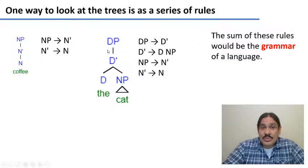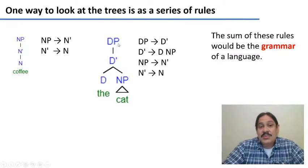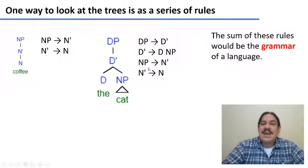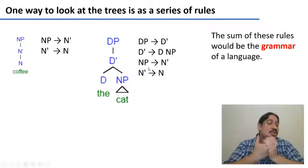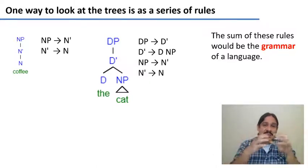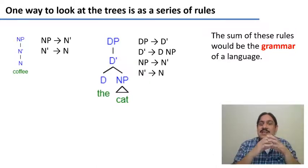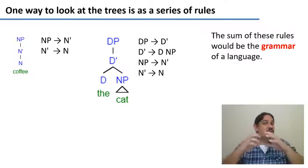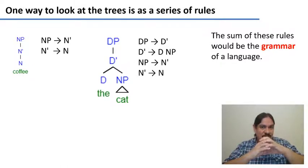So every tree could be rewritten as a series of rules, and the collection of these rules — the totality of the rules that can generate trees in English — would be called the grammar of English, because this is what lets you generate new sentences of English.